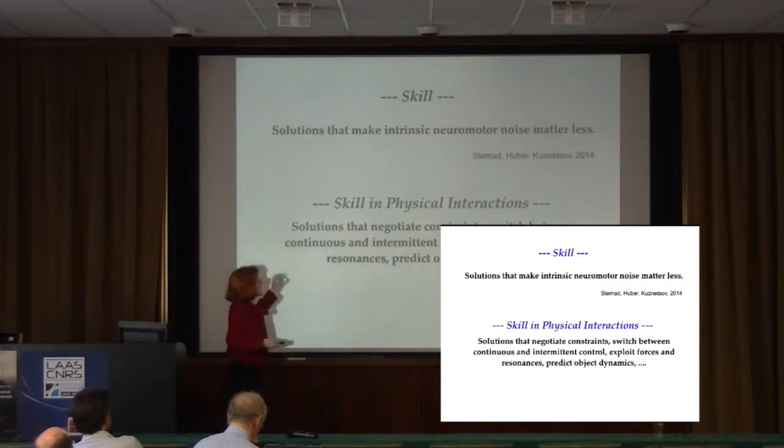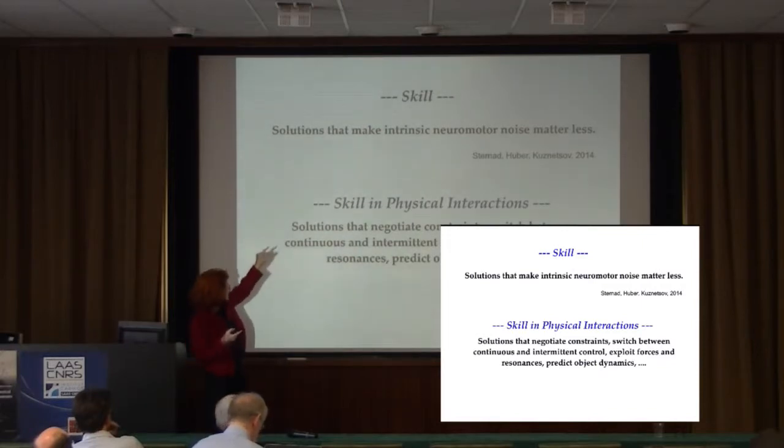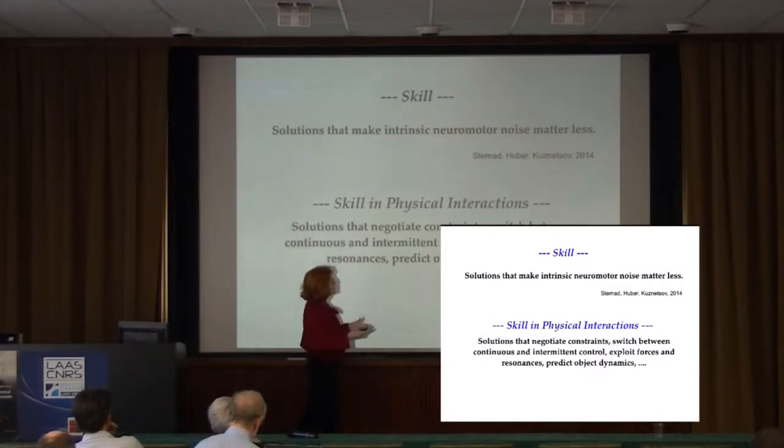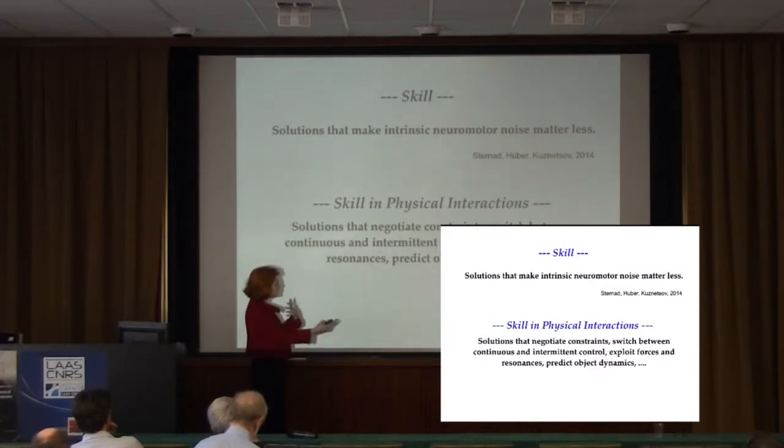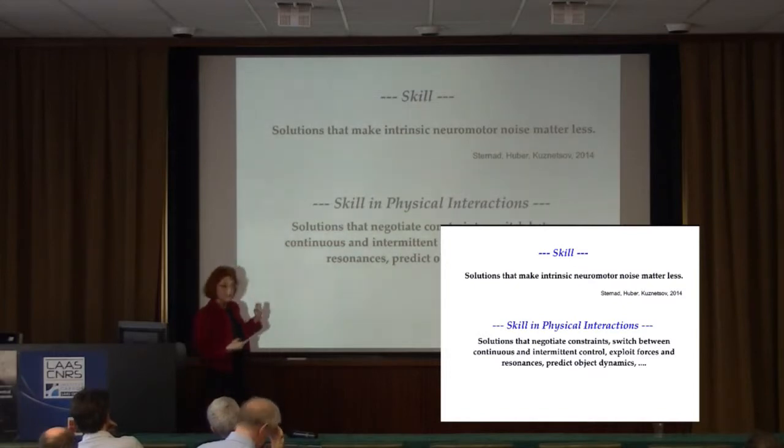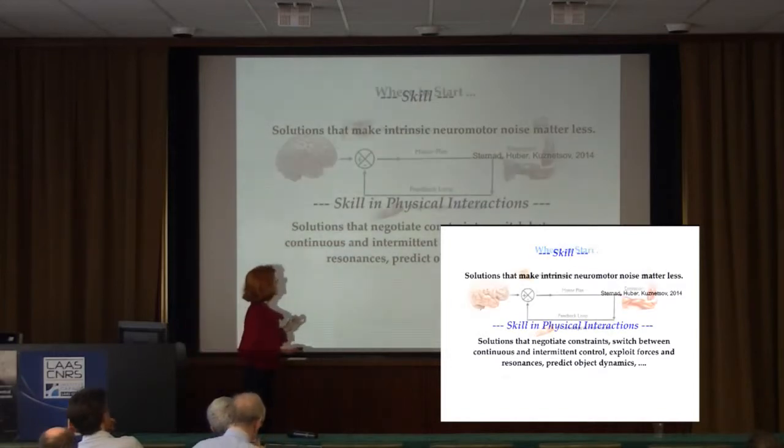Or maybe, as I like to say, skill might be conceived of a little bit differently, namely that these are the solutions or the strategies that make this intrinsic neuromotor noise matter less. We can't eliminate it, so let's find skillful ways to deal with it and still achieve the task that we want to achieve. Now, I said interactive skills, physical interactions, actually poses more interesting problems where we can see how that first definition is achieved. Just to kind of characterize the range of physical interactions that imply solutions that negotiate constraints where we switch between continuous intermittent control, we exploit forces and resonances, we have to predict object dynamics.